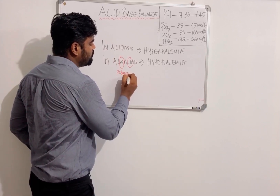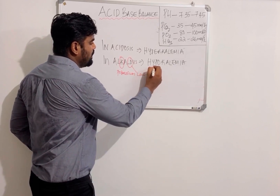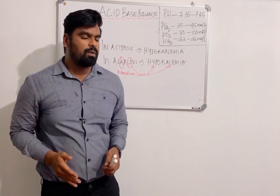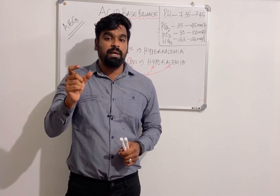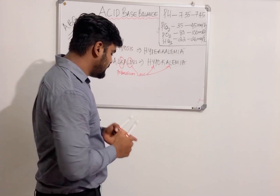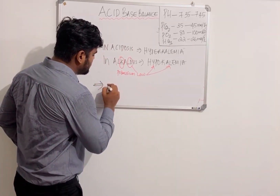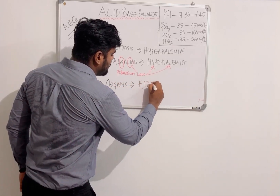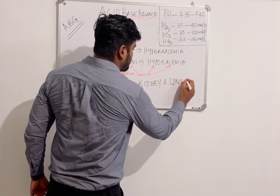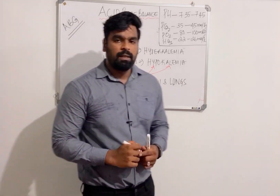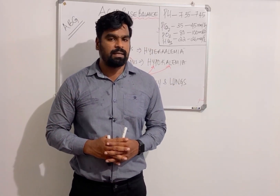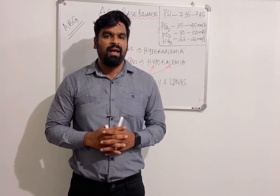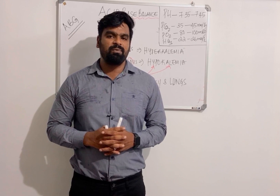Another important point to remember: acid-base balance is controlled by the kidneys and lungs. These are the important points related to Arterial Blood Gas analysis. If you like this video, please subscribe to the YouTube channel and share with your friends. See you in another video, thank you.